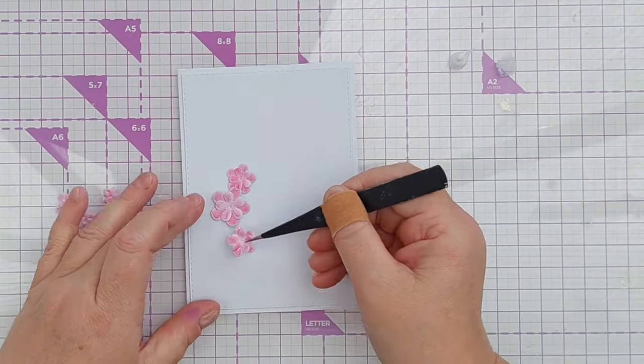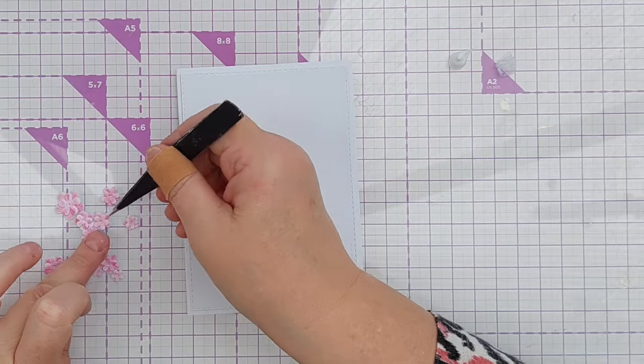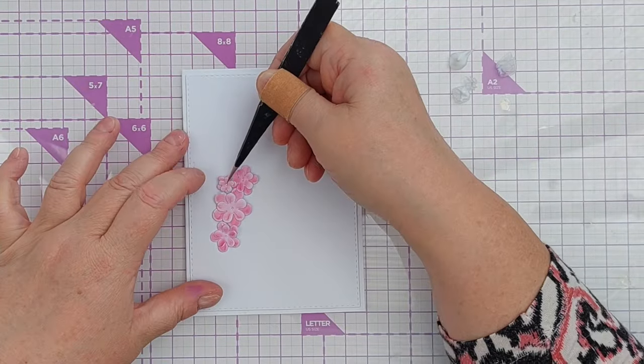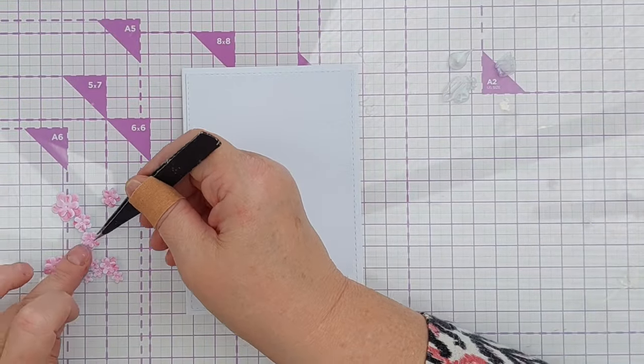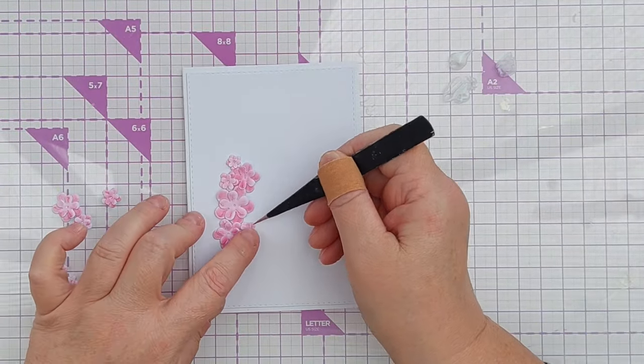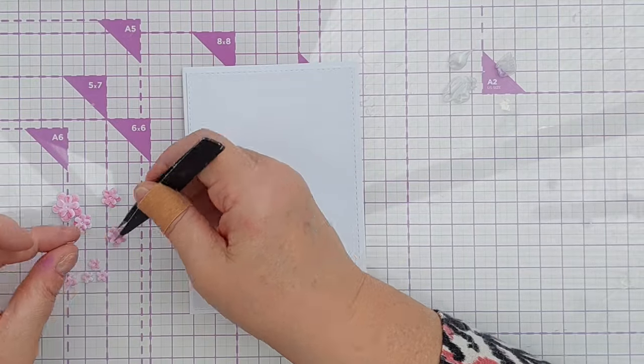So I popped some of my glue onto my glass mat, dipped the flowers in and then arranged them up the card in a kind of tall thin pyramid so they were looking quite statuesque.